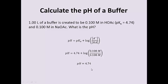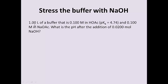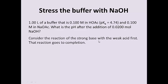So that is how we calculate the pH of a buffer solution. But now, what happens to this buffer solution when we add a strong base? We're going to take that buffer solution and stress it by adding a strong base. So in this case, we take one liter of the buffer solution that is 0.1 molar in acetic acid and 0.1 molar in sodium acetate, and add to it 0.0200 moles of sodium hydroxide. Sodium hydroxide is a strong base, and so we have to consider that the reaction of the strong base and the weak acid has to go to completion. Here's my weak acid and here is my strong base.